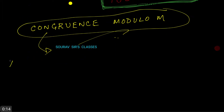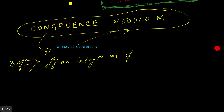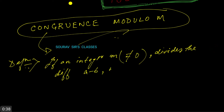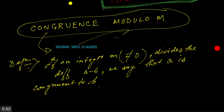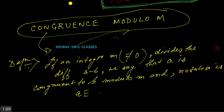Let us define what we are going to talk about. We say that if an integer m, not 0, divides the difference a minus b, we say that a is congruent to b modulo m, and we write it as a ≡ b (mod m).